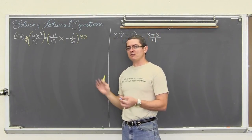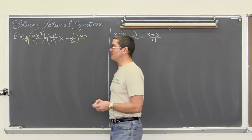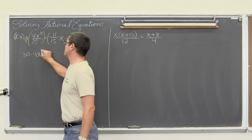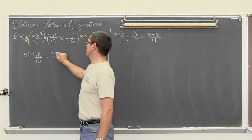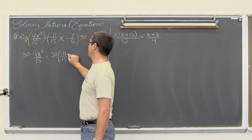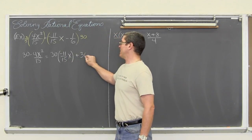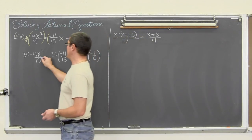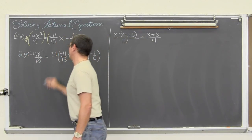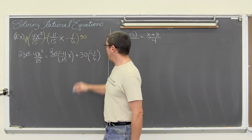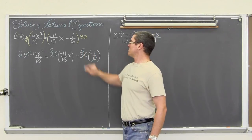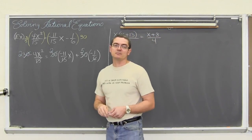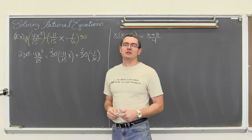On this first problem, I am going to show all the multiplication before we do any cancellation, just so you can see it. We are going to have positive 30 times 4x squared over 15 equals positive 30 times negative 11 over 15, plus a positive 30 times negative 1 sixth. 30 divided by 15 is equal to 2. 30 divided by 15 is again equal to 2. And 30 divided by 6 is equal to 5. So now that we have cancelled out all those denominators, we can handle the rest of this problem using the skills from past sections.